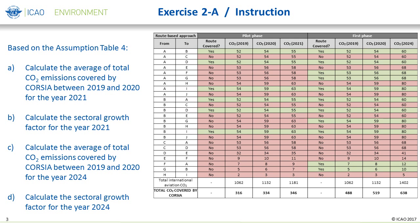Based on the information in Assumption Table 4 of the exercise, the first task is to calculate the following four values: the average of the total CO2 emissions covered by CORSIA between 2019 and 2020 for the year 2021; the sectoral growth factor for 2021; the average of the total CO2 emissions covered by CORSIA between 2019 and 2020 for the year 2024; and the sectoral growth factor for 2024.